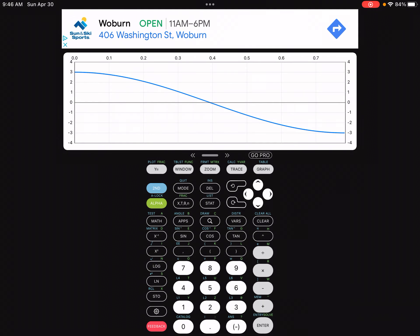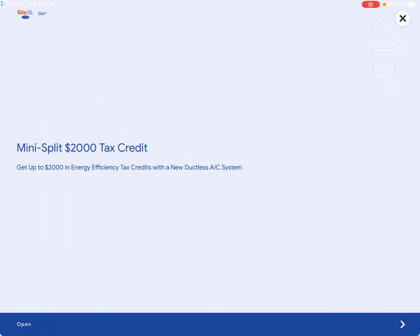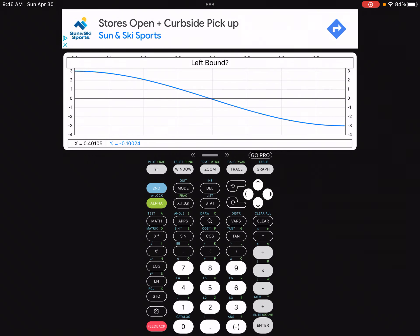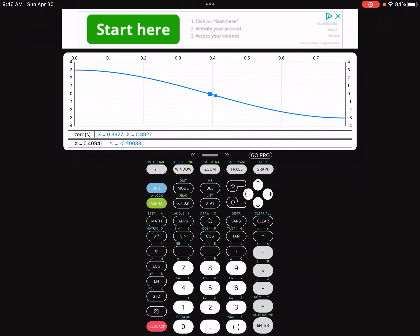There's my window, I hit graph. So there's the curve you should be seeing. What we want is this x-intercept, because an x-intercept in Cartesian form represents a moment at which the polar curve is back at the pole or the origin, and we need the first time that happens because that angle is the upper limit of integration. So we hit 2nd and then trace, we want to calculate the zero. Sorry, this ad is because I have the free version. We go left bound, enter, right bound, enter. So it looks like 0.3927.